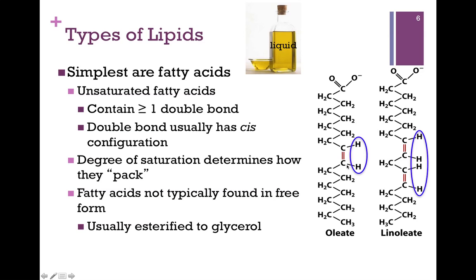In each case, you'll notice that the double bond has a cis configuration — that is, the hydrogen atoms are on the same side of that bond. In unsaturated chains, they pack together differently than saturated chains. They tend to be more loosely associated, and that makes them liquid at room temperature, like olive oil.